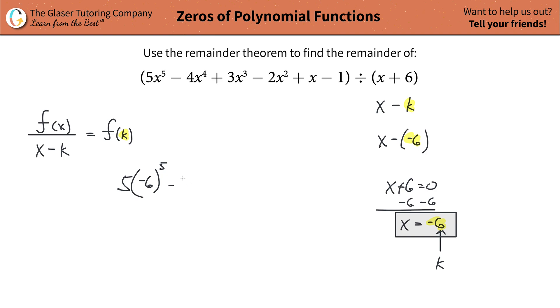So minus 4. Definitely using a calculator on this one. I can tell you that right now. Plug in a negative 6 there. That's great. Then plus 3x. Oh, no, no. Negative 6. Whoops. Cubed. Oh, my God. Really? They had to give us something this long? Negative 6 squared plus x minus 1.